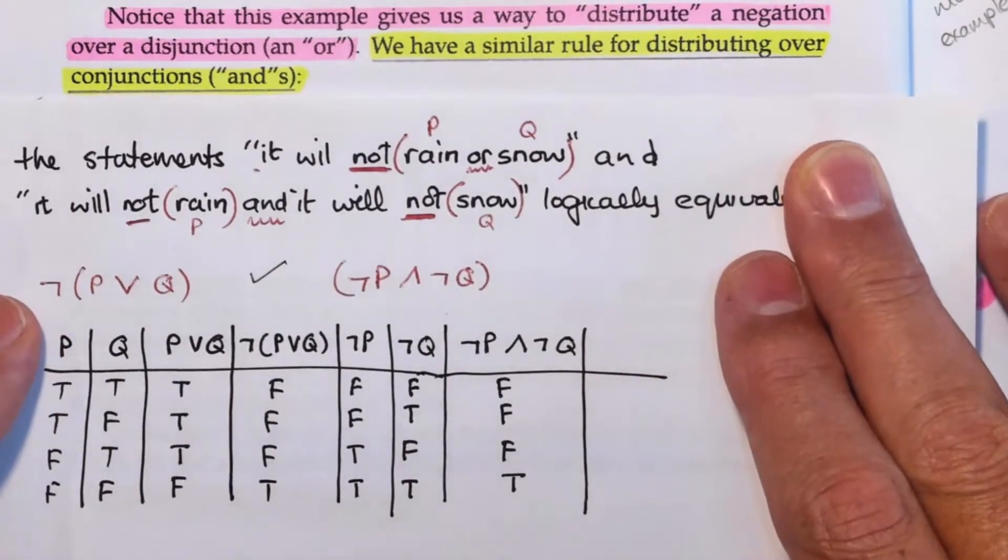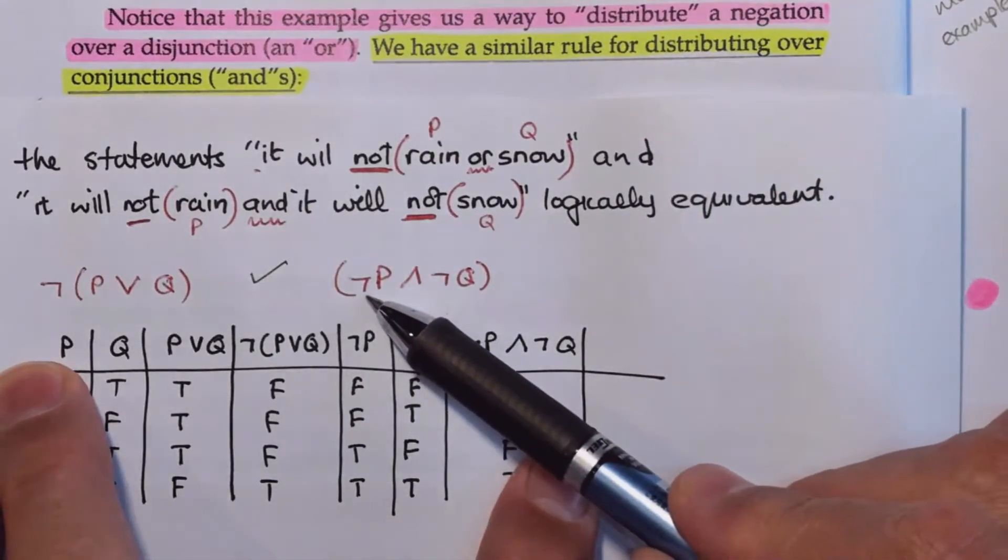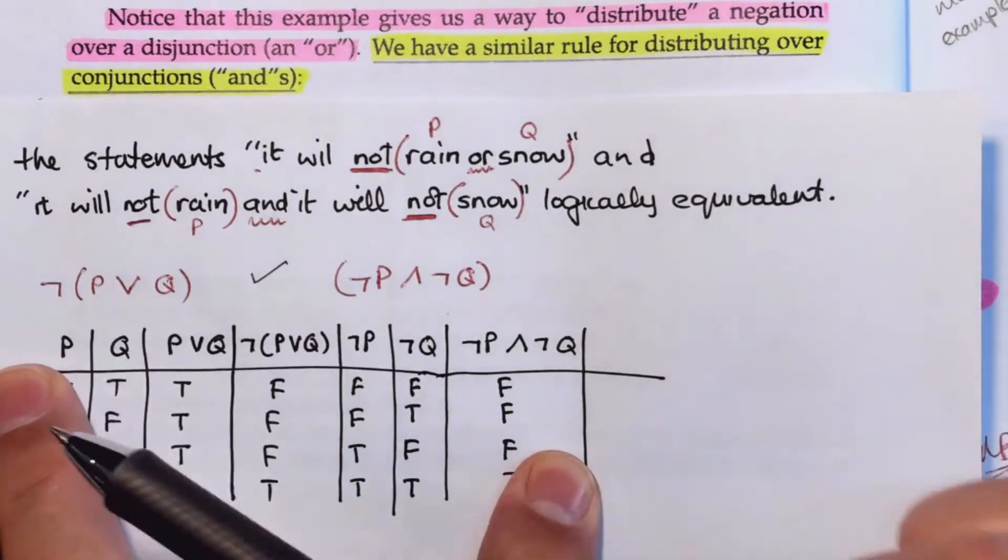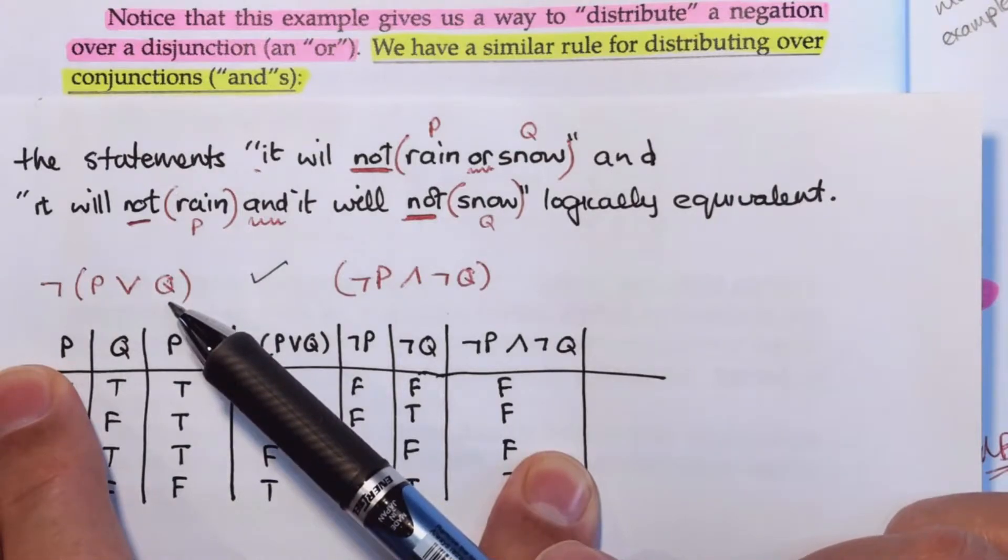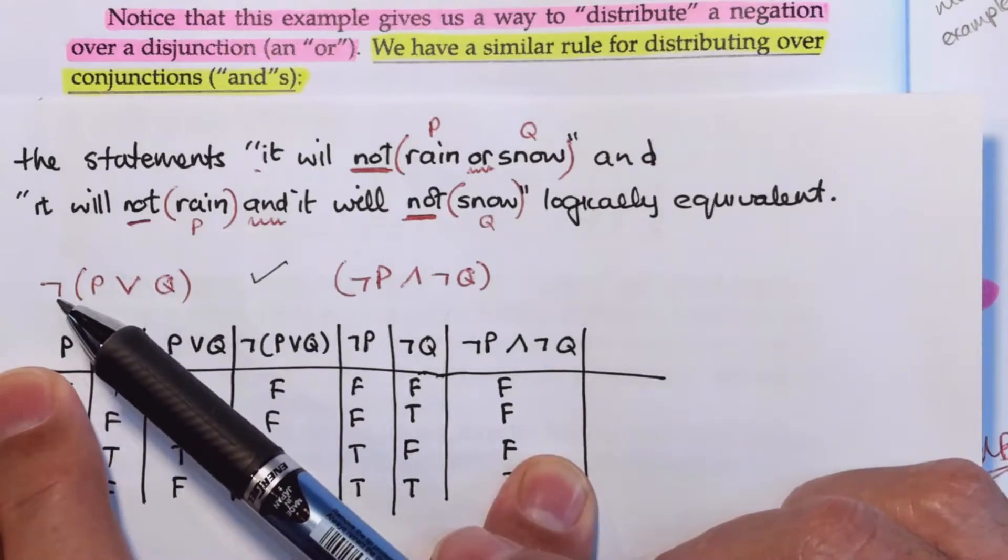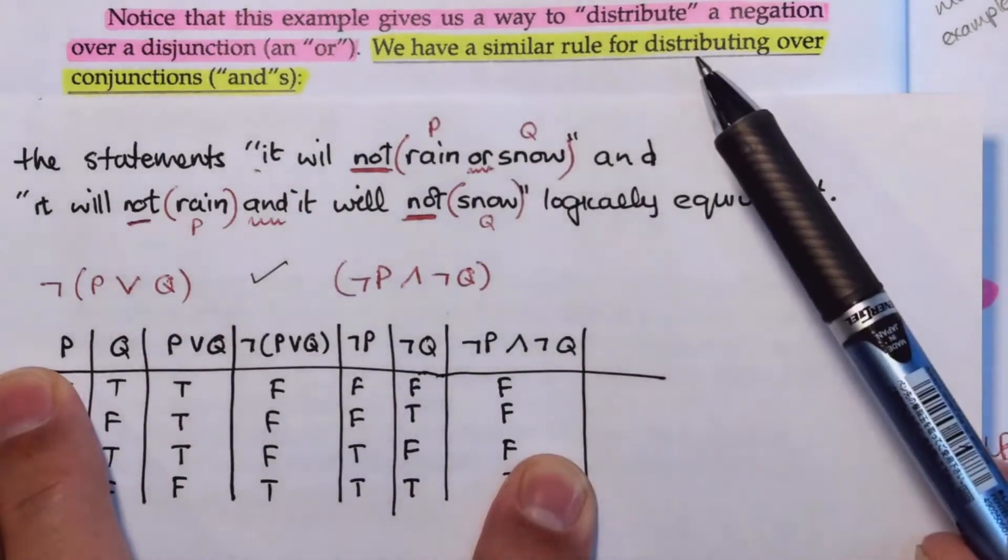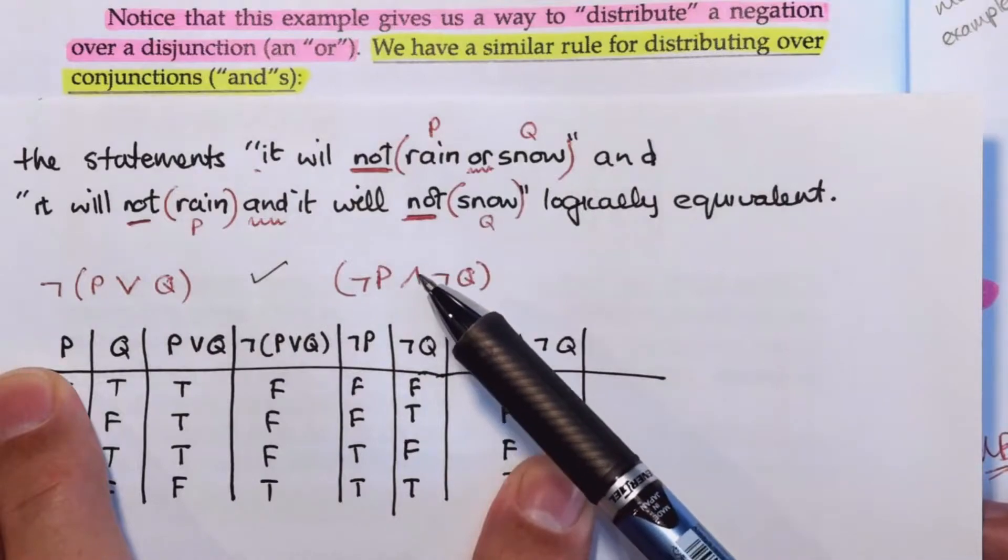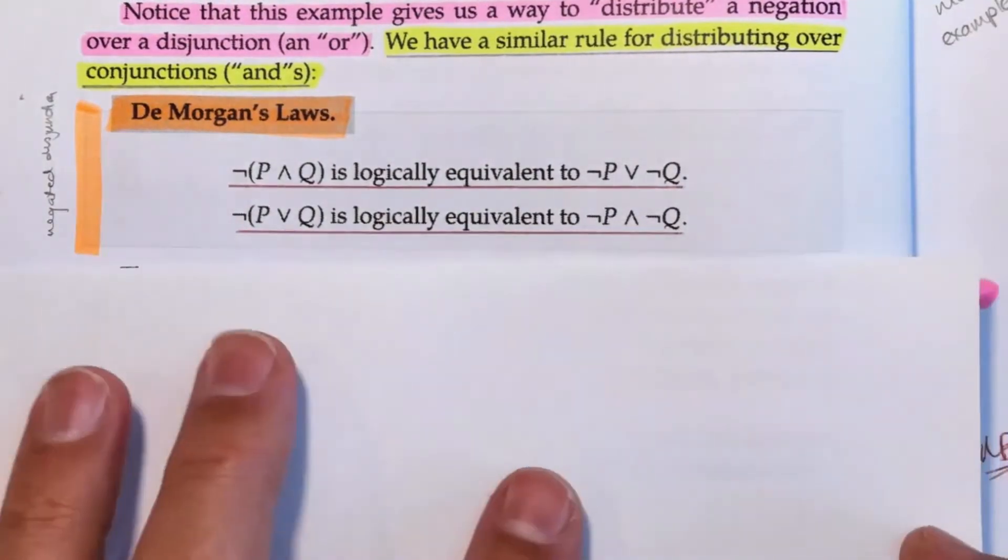In the book it says, notice that this example gives us a way to distribute a negation over a disjunction. A negation over a disjunction. That is what it gives us a tool for. To distribute a negation over a disjunction. We have a similar rule for distributing over conjunctions, the ands, these symbols over here. And in comes DeMorgan's Laws.